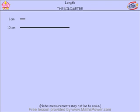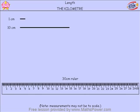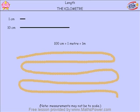Here I have measured 10 centimetres, and once again that measurement may not be exactly to scale. Most rulers that we use around the home and at school are 30 centimetres in length. Do you have a 30 centimetre ruler? And 100 centimetres equals 1 metre. If this piece of string was stretched out straight, it would be approximately 1 metre or 100 centimetres in length.